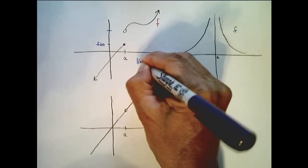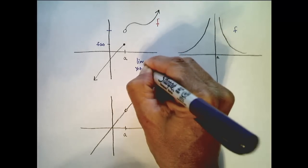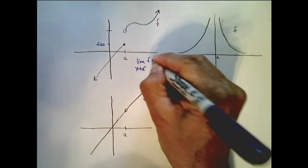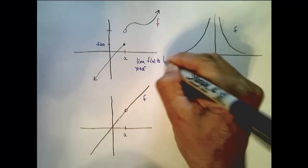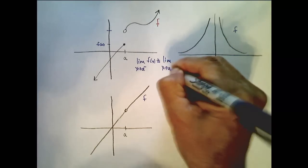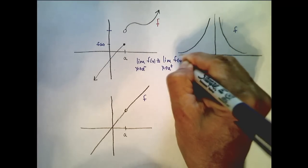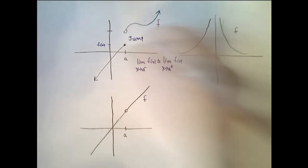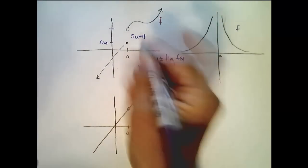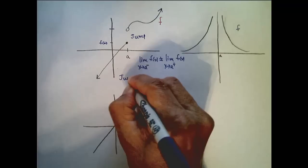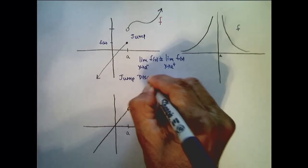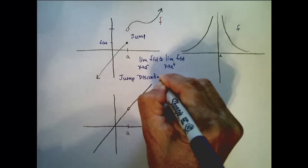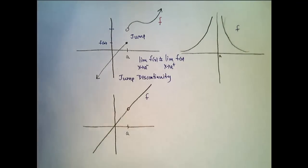So since the limit as x approaches a from the left of f(x) doesn't equal the limit as x approaches a from the right of f(x), we have this jump in the graph. And we call this a jump discontinuity.